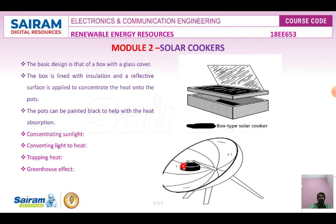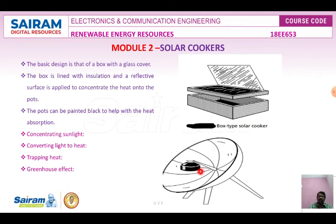Another type is the parabolic dish type cooker. All sun rays are collected by the parabolic dish, and a pot is kept over the dish. The pot is painted black so it receives all the heat energy and converts light energy into heat, boiling or cooking the food inside.